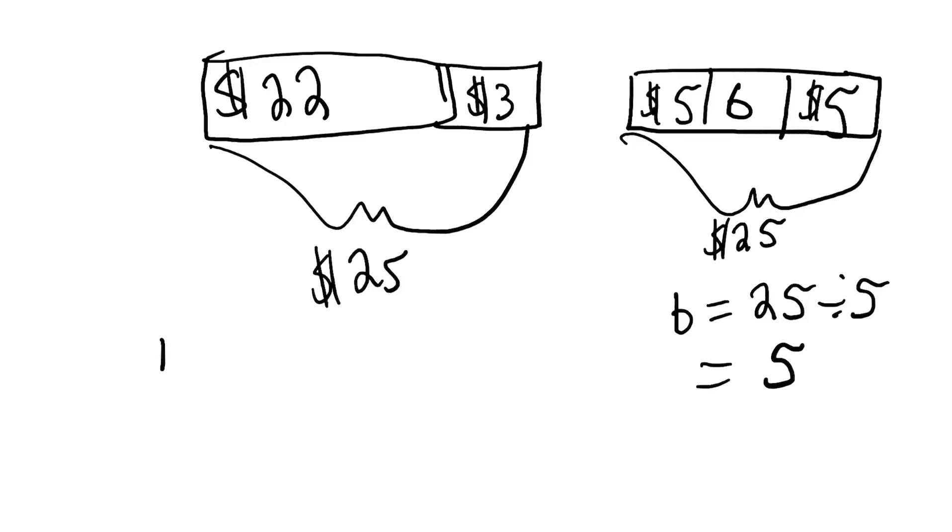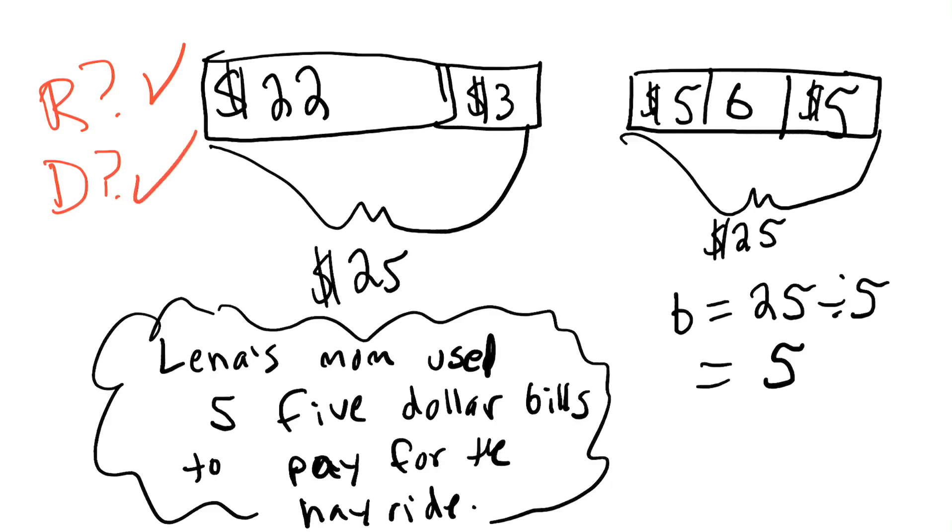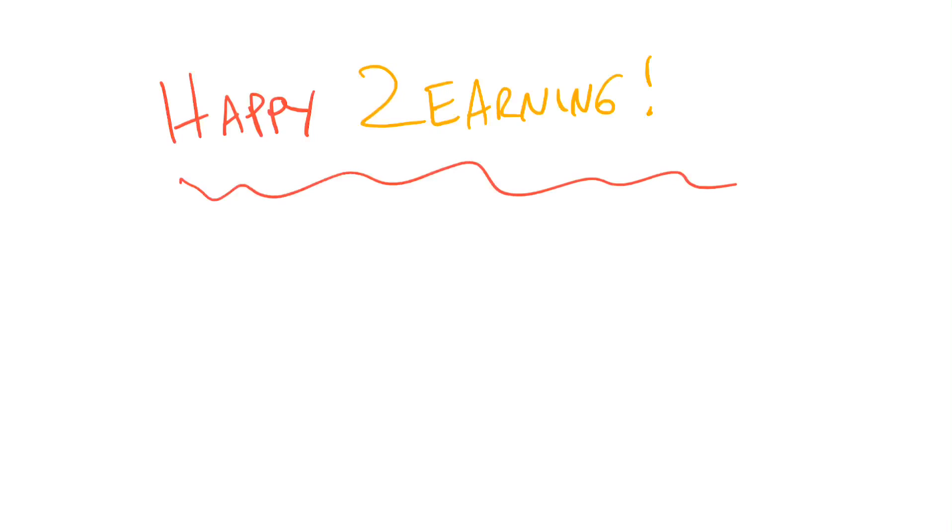That's what I'm going to write here. Lena's mom used 5, $5 bills to pay for the hayride. Did I read the question? Yes. Did I draw a picture to help my math thinking? Yes. Did I write? Did I write the answer? Did I work through it? Yes. And that is an example of some of the things you will be working on. Happy zerning.